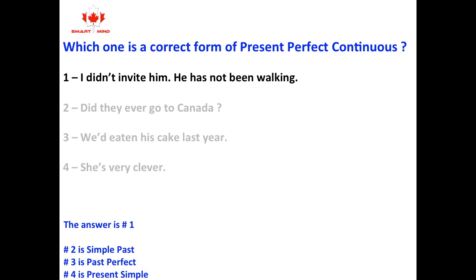The answer is number one. I didn't invite him. He has not been walking. Number two is simple past. Number three is past perfect. Number four is present simple.